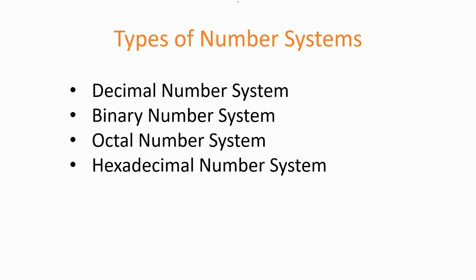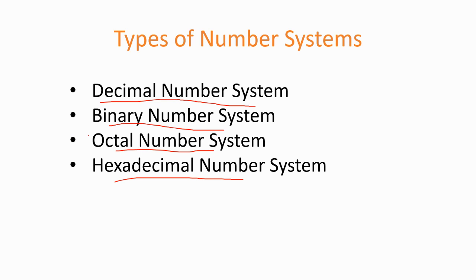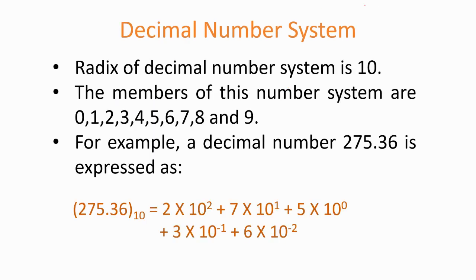There are four different number systems. First is the decimal number system, which we use commonly in daily life. Second is the binary number system. Third is the octal number system, and fourth is the hexadecimal number system. Octal and hexadecimal are mostly used to represent binary data in a simpler way, since binary representations have many bits which can be reduced using these systems.